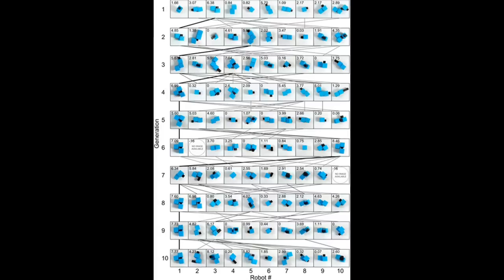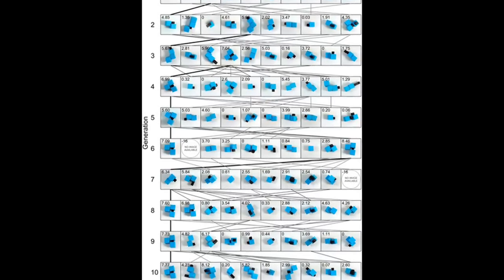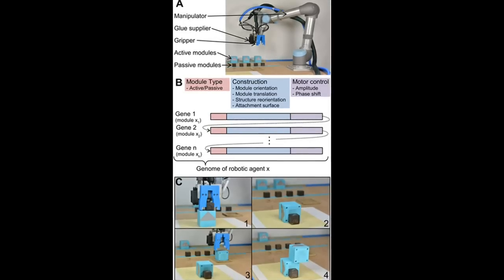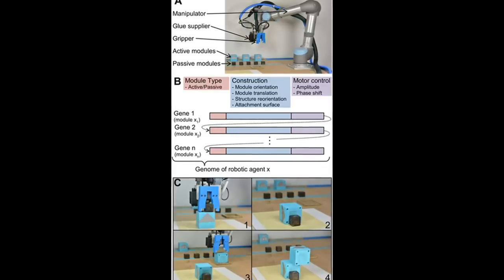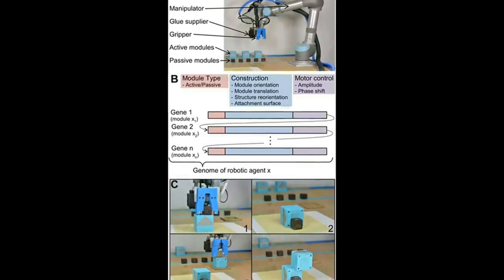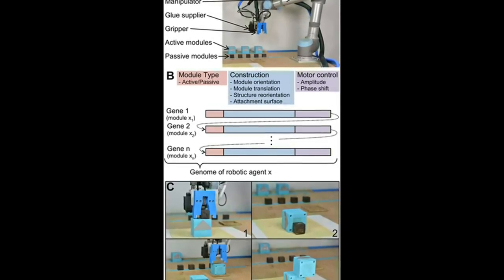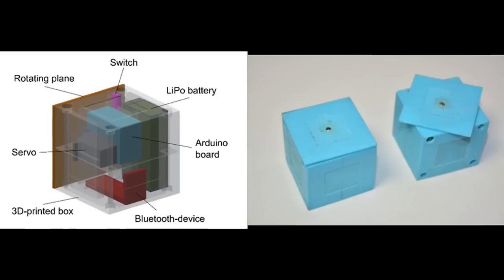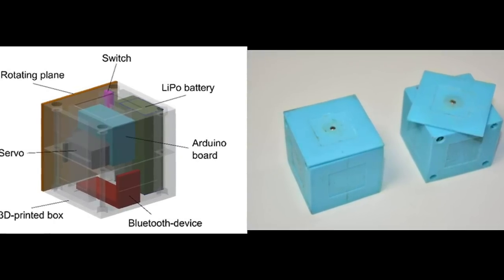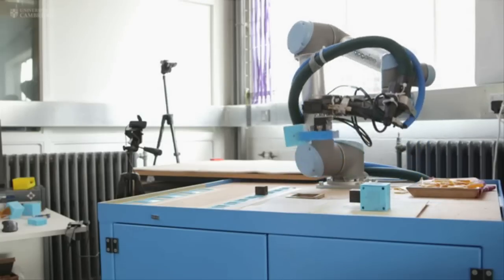Evolutionary robotics is a growing field which allows for the creation of autonomous robots without human intervention. Most work in this field is done using computer simulation. Although computer simulations allow researchers to test thousands or even millions of possible solutions, this often results in a reality gap, a mismatch between simulated and real-world behavior.